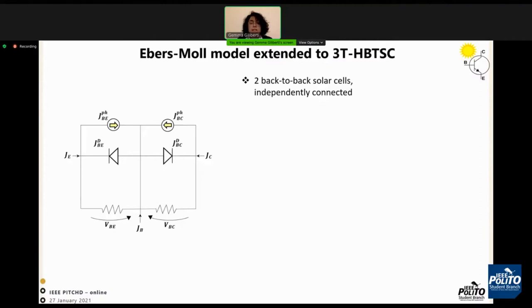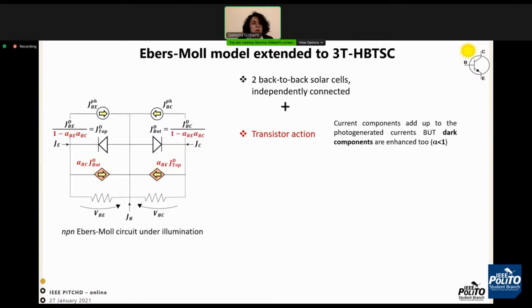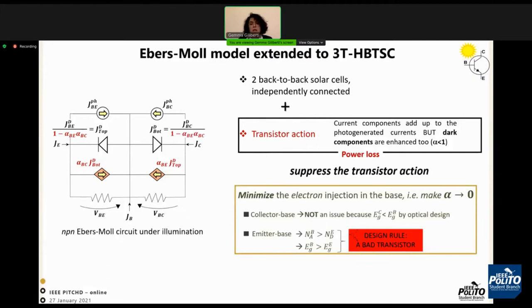Once we solved the model, we arrived at a circuit description of this solar cell that can be solved as two back-to-back solar cells electrically connected, adding the transistor effect. The photogenerated current due to the transistor effect adds to the photocurrent. In parallel, the current is enhanced by the coefficient alpha, the common base current gain. When alpha is close to one, the transistor effect provides a power loss, so we must suppress this effect.